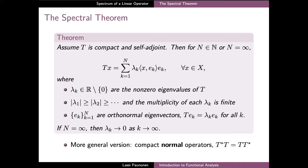Our main result states that every compact self-adjoint operator on a Hilbert space does indeed have a spectral decomposition with very similar structure. More precisely, for every x the image Tx can be expressed as a possibly infinite linear combination of an orthonormal set of vectors e_k, and the coefficients of the linear combination have the same form as in the case of Hermitian matrices. The vectors e_k are orthonormal eigenvectors corresponding to the non-zero eigenvalues λ_k of T.